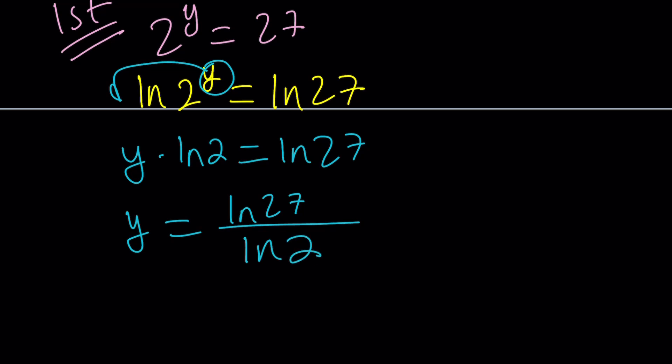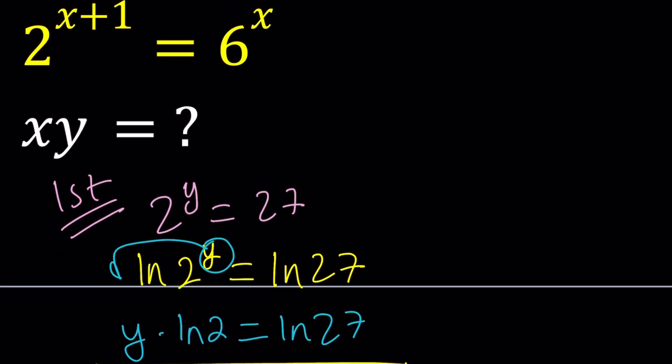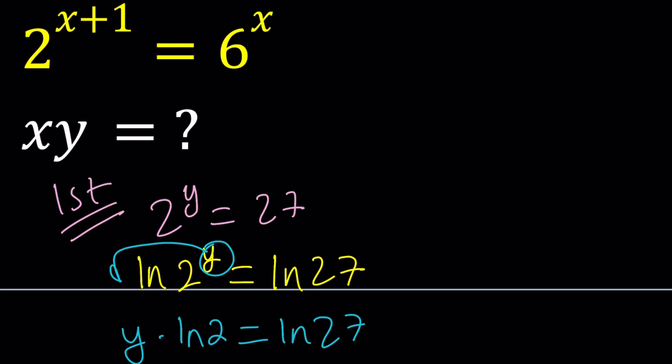ln basically represents the natural log of whatever that number is. So we found the Y value. Our goal is to solve for X and Y separately because they're not mixed, and then find XY.